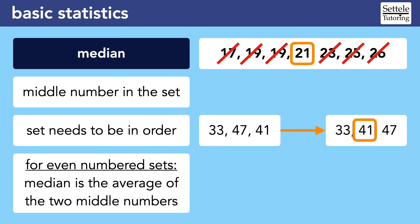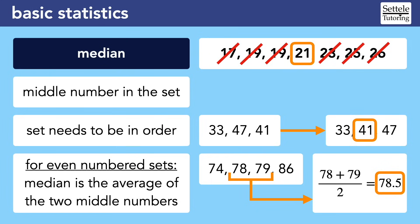Median is a bit tricky when the data set has an even number of values. In this four-numbered list, there isn't a single middle number. When this happens, find the two middle values and get their average. In this case, the average of 78 and 79 is 78.5. So the median of the set is 78.5, even though that specific number does not appear in the data set.